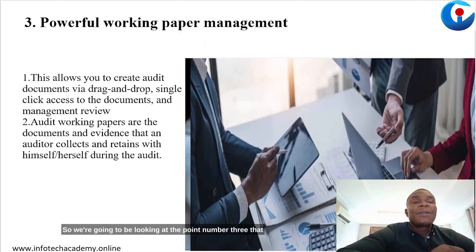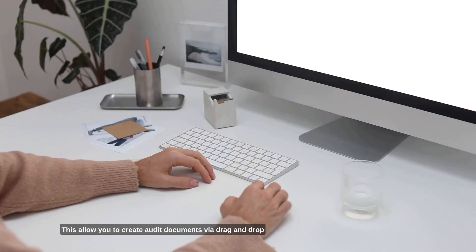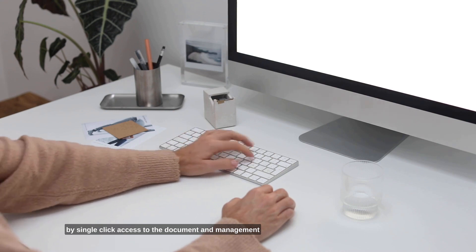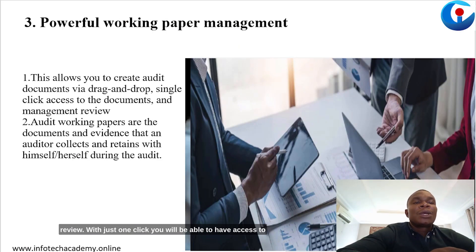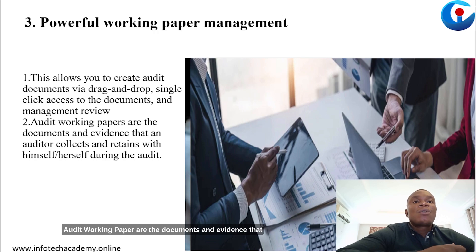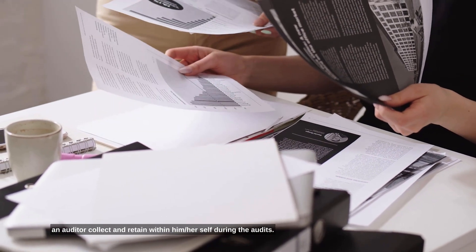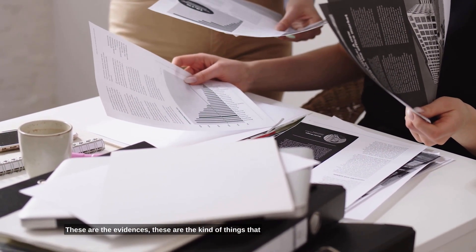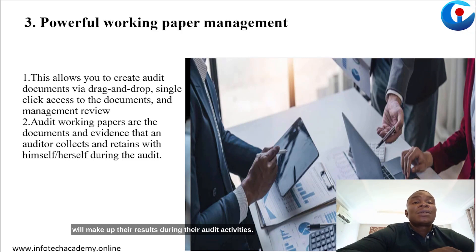Point number three is powerful working paper management. This allows you to create audit documents via drag and drop, and provides single-click access to documents and management review. Audit working papers are the documents and evidence that an auditor collects and retains during the audit — these are the evidences that make up the results during audit activities.